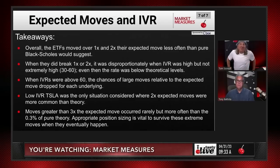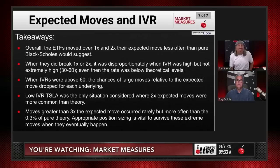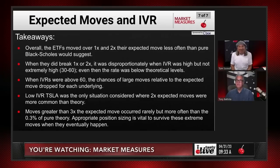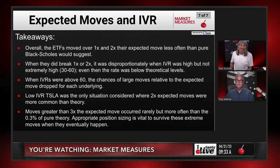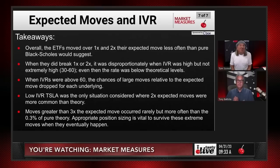From the research team's summary slide: overall, ETFs moved over one and two times their expected move less often than pure Black-Scholes theory would suggest. When they did break one or two times, it was disproportionately when IVR was high but not extreme. When IVRs were above 60, the chance of large moves relative to expected move dropped. For Tesla at low IVR, two-times expected moves were more common than theory. Moves greater than three times the expected move occurred rarely but more often than the theoretical 0.3%. Appropriate position sizing is vital to survive these extreme moves.